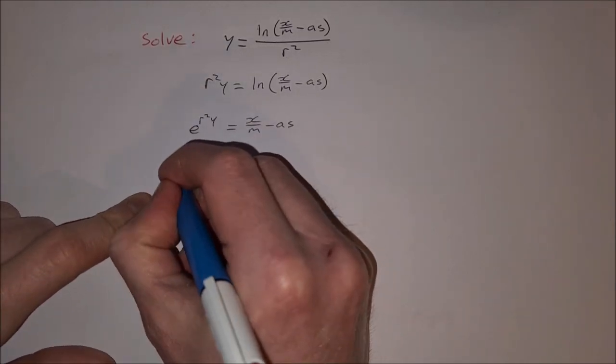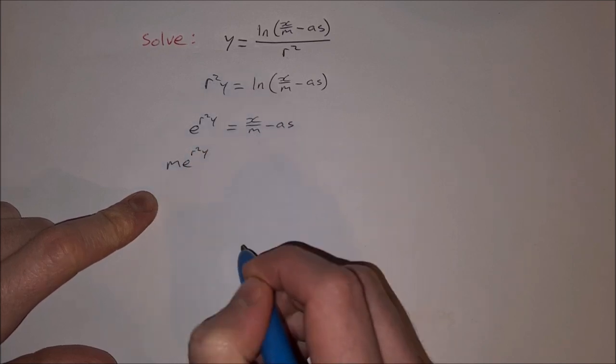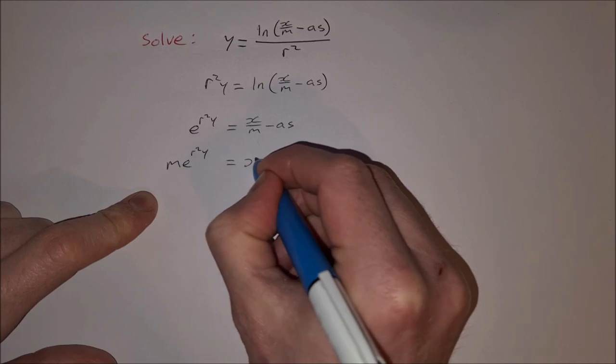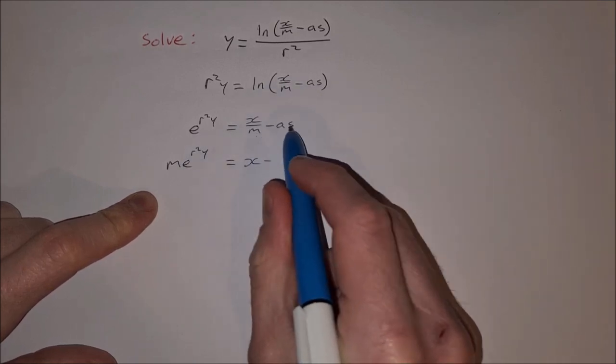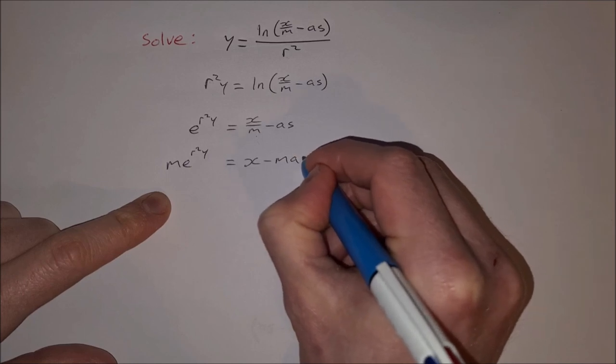So that would be m e to the power of r squared y equals x minus, and then I have to multiply this a s by m as well, so I suppose that's m a s.